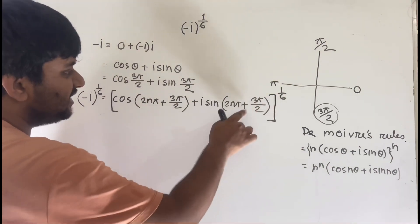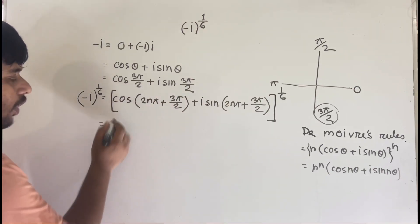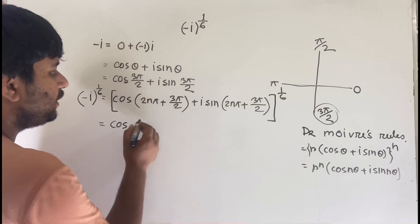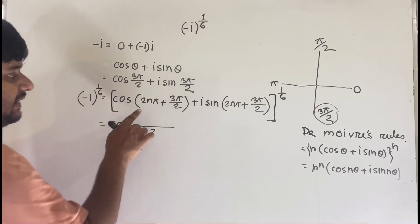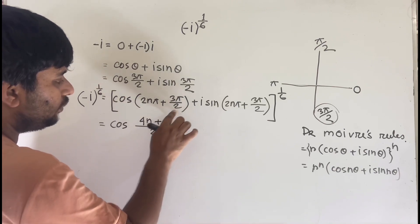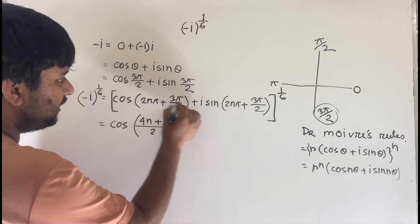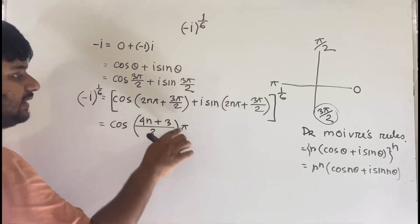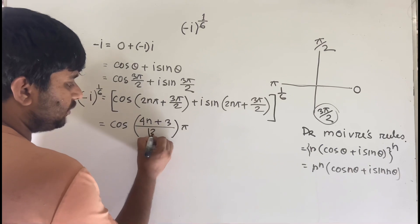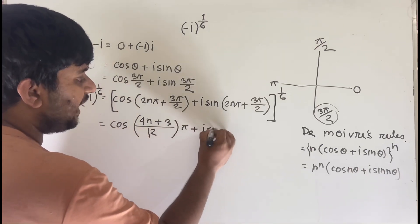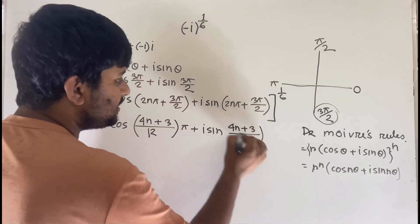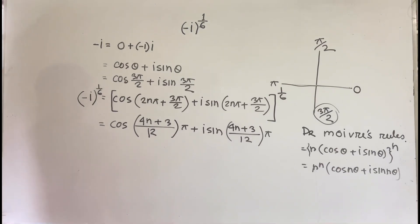Multiplying the exponent 1 over 6 into the angle, we get cos((2nπ + 3π/2) × 1/6) + i·sin((2nπ + 3π/2) × 1/6). Simplifying, this becomes cos((4nπ + 3π)/12) + i·sin((4nπ + 3π)/12), where n takes integer values.